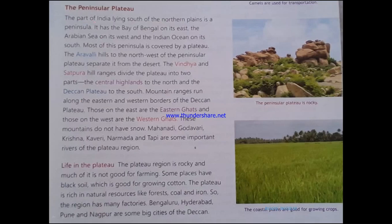The peninsular plateau — the part of India lying south of the northern plains — is a plateau. It has the Bay of Bengal on its east, the Arabian Sea on its west, and the Indian Ocean on its south. Most of this peninsula is covered by a plateau. India is a peninsula with these three water bodies surrounding it.